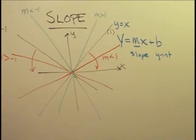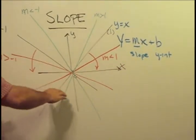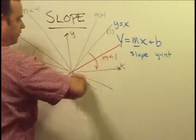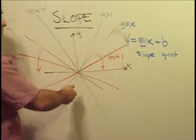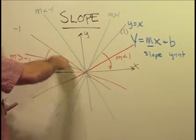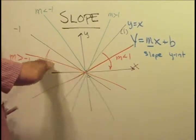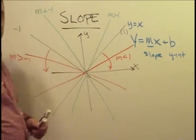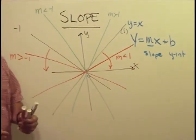That is how slope looks on the xy-plane. The standard slope of one, a slope that's a fraction, a slope that's greater than one, a slope that's negative, a slope that is a negative fraction, and a slope that is a negative number where the number is less than negative one.